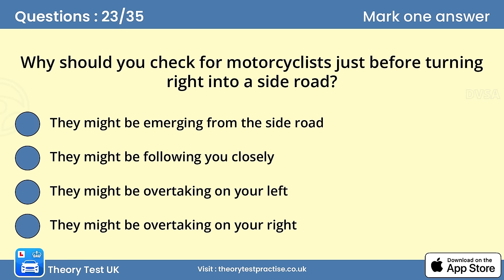Question 23. Why should you check for motorcyclists just before turning right into a side road? The answer is D: They might be overtaking on your right. Never attempt to change direction to the right without checking your right-hand mirror. A motorcyclist might not have seen your signal and could have decided to overtake. This action should be a matter of routine.